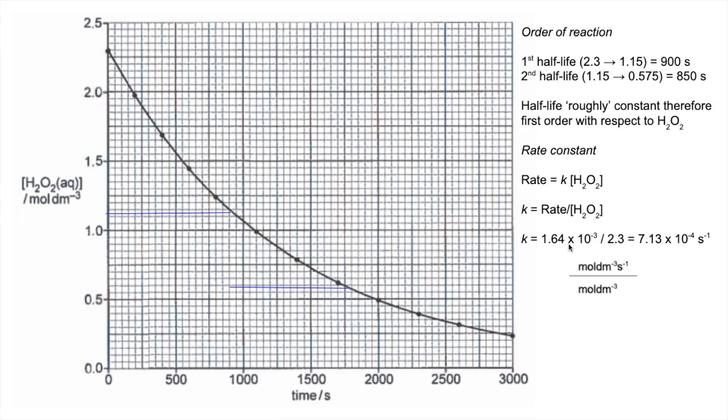Just quickly explain the units. We've calculated k from this equation here. If we put the units in, you've got the units of rate on the top, the units of concentration on the bottom. We can cancel out those moles per dm³, and we're just left with s⁻¹.